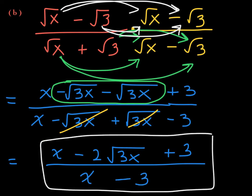Please do not think you can cross-cancel the 3s or the x's — we don't cross-cancel between terms, only between factors. Remember: whenever you have two terms in the denominator, you always multiply by the conjugate of the denominator.